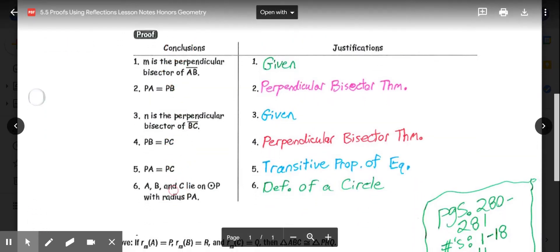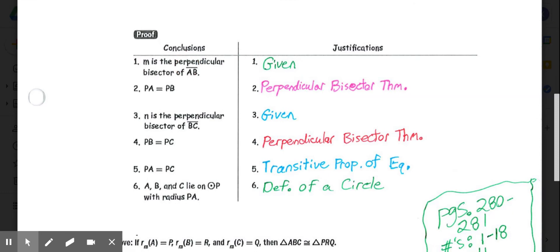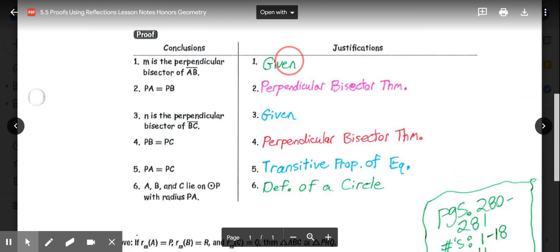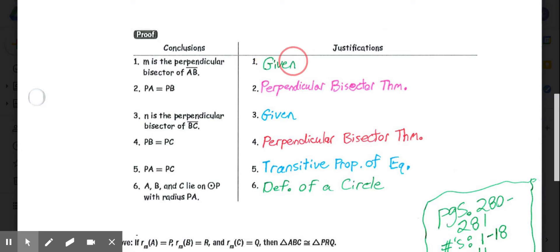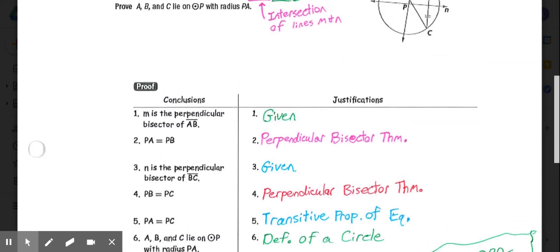To start off the proof, they gave us all the conclusions. We're just filling in the justifications. They started with stating M is the perpendicular bisector of AB. That justification would be the word given because that's some of our given information. Not all of it, but some of it.